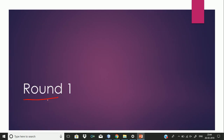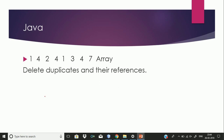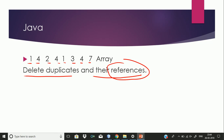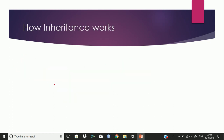There were mainly two rounds. The first round was with a software developer. The question he asked was: given an array like [1, 4, 2, 4, 1, 3, 4, 7], you need to delete the duplicates along with their references. This is important — you need to delete the numbers along with their references. Since they work in Java, they will ask Java-related questions in the first or second round.